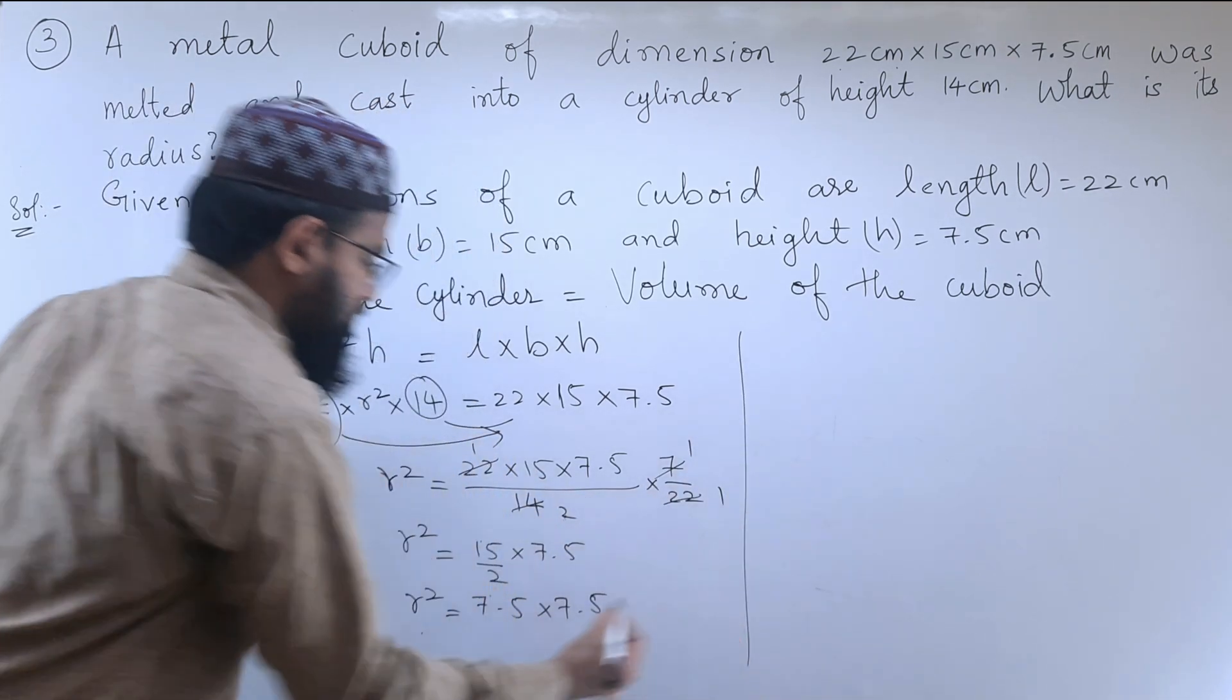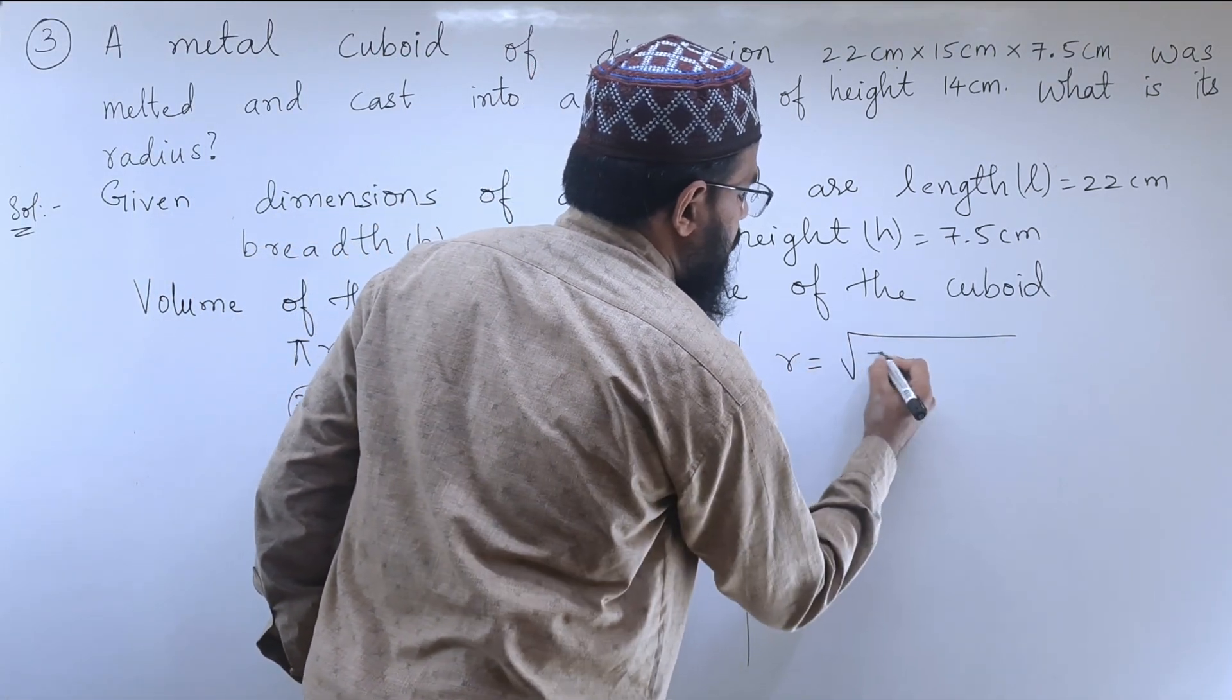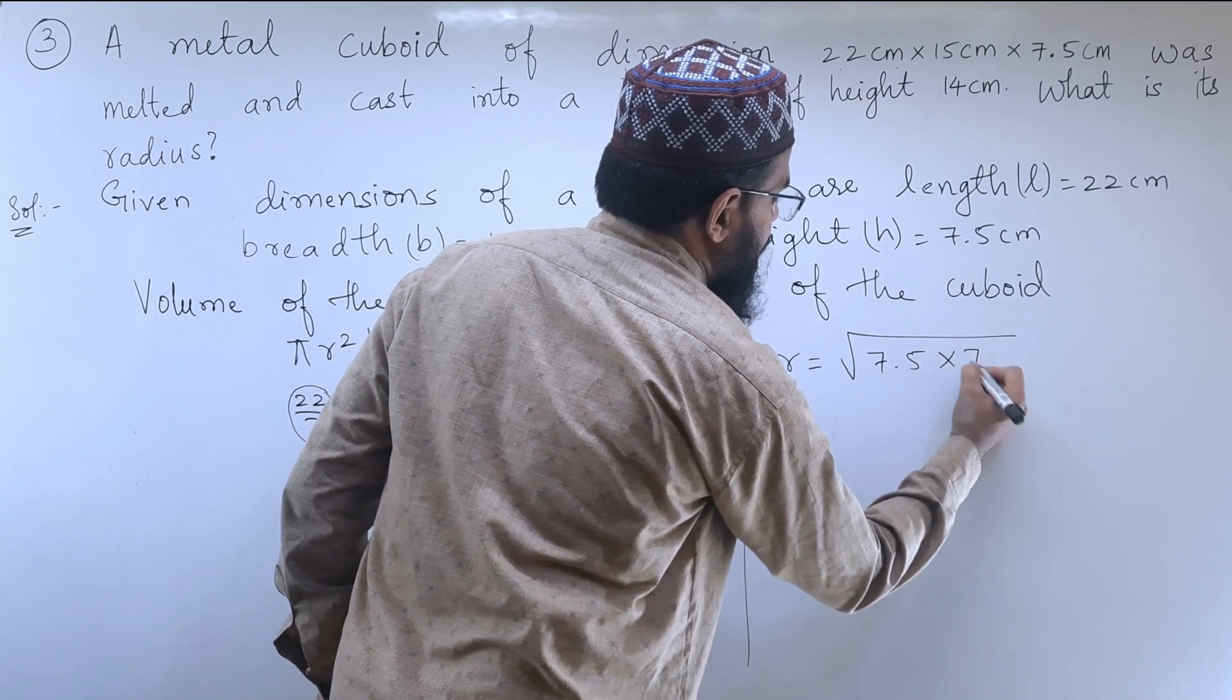When we remove this square, we get the square root. So R is equal to under root of 7.5 into 7.5.